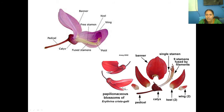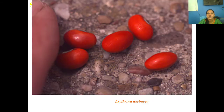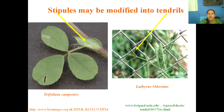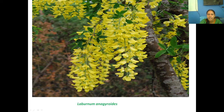These are the lateral petals and this is the standard petal; the keel petals are fused. Another important point to remember is the descendingly imbricate structure. This is Erythrina with red-colored seeds. This is the trifoliate leaf, and the stipule has been modified into a tendril in Lathyrus. This is another plant, Cassia laburnum, similar to Erythrina.